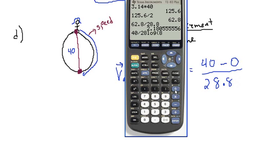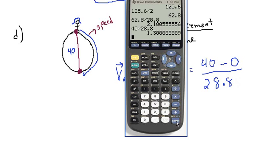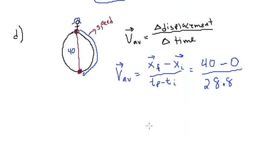That gives us 1.38 and I'll round to 1.39. So the average velocity is 1.39 meters per second.